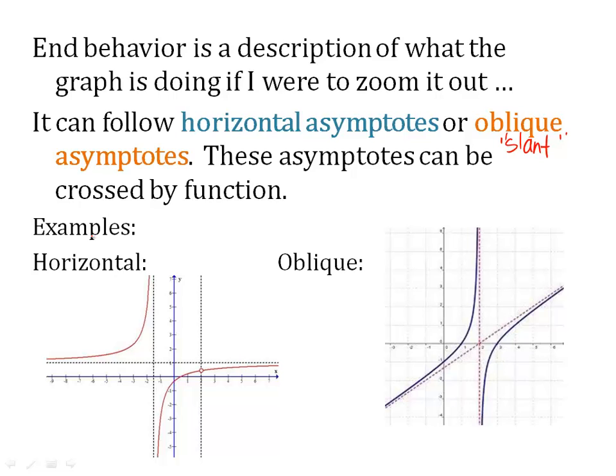If you'll remember, vertical asymptotes cannot be crossed. However, horizontal and oblique ones, they can be. Just FYI, they can be crossed. So look at these examples.